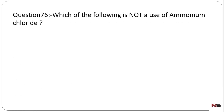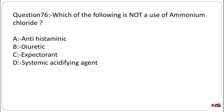Question number 76: Which of the following is NOT a use of ammonium chloride? Option A: antihistaminic, Option B: diuretic, Option C: expectorant, Option D: systemic acidifying agent. Ammonium chloride is not an antihistaminic, so the correct answer is Option A. Ammonium chloride can be used as a diuretic, expectorant, and systemic acidifying agent, but it is not an antihistaminic.